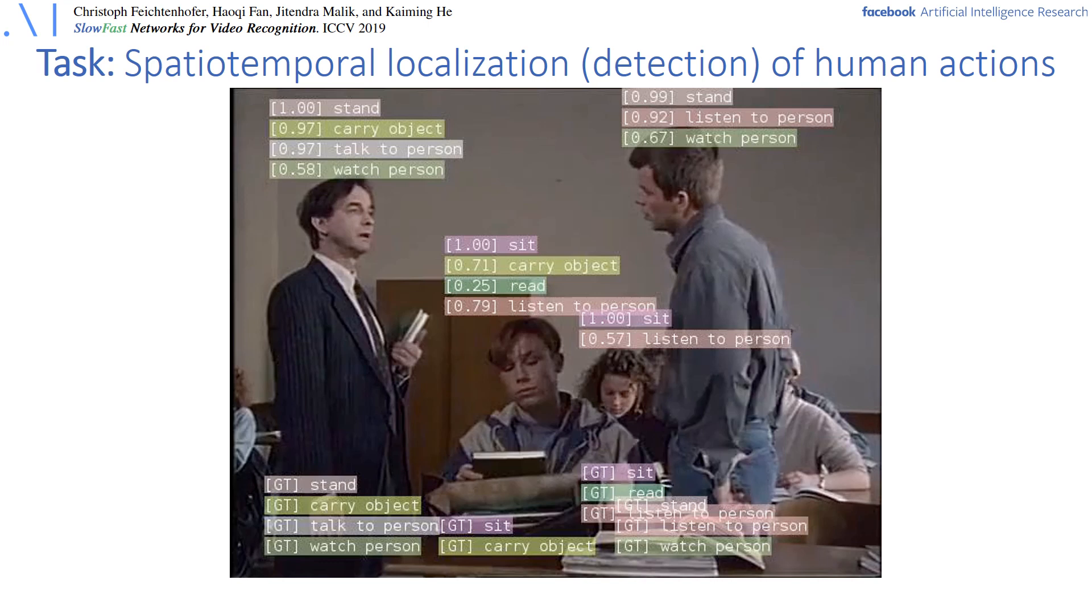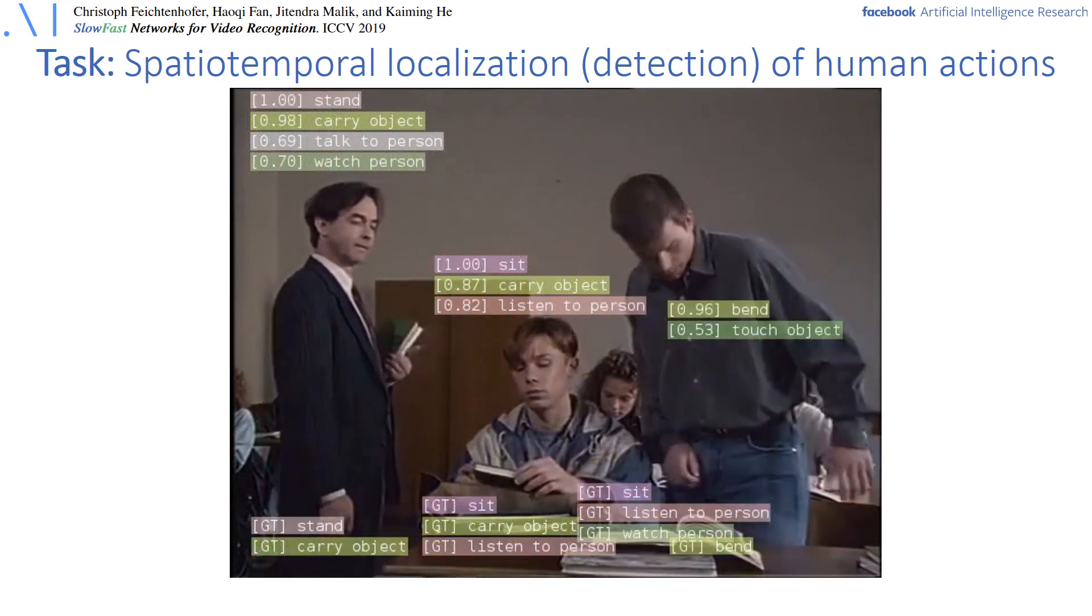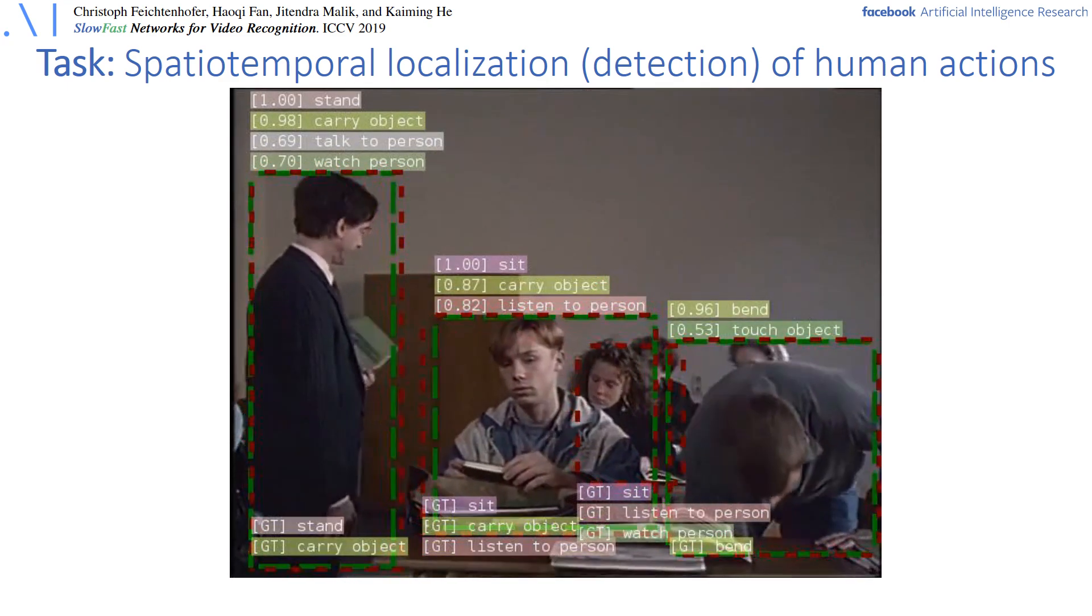This image is a sample from the AVA dataset with the ground truth actions shown at the bottom. For example, the person on the left is standing, carries an object, talks to a person and also watches a person while doing so. Note that many of these actions are not able to be recognized from a single image. For example, if the person on the left is talking and the person on the right would sit down.